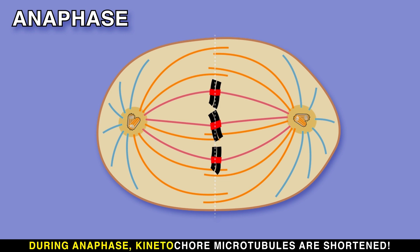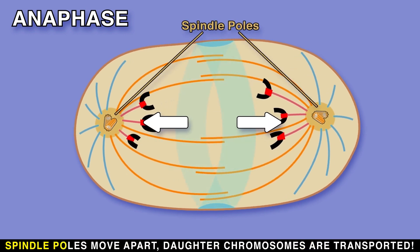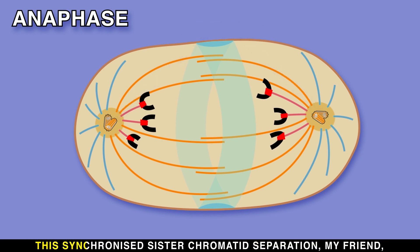During anaphase, kinetochore microtubules are shortened. Spindle poles move apart, daughter chromosomes are transported. This synchronized sister chromatid separation results in a set of daughter chromosomes at each end.